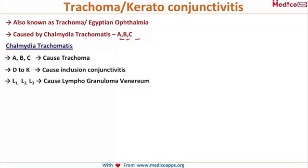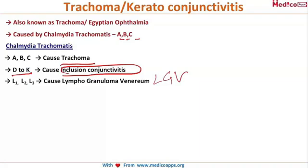A, B and C cause trachoma. D to K cause inclusion conjunctivitis. Lymphogranuloma venereum, or LGV, is caused by L1, L2, L3 — L is for Lymphogranuloma venereum.